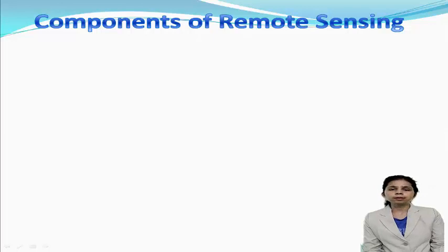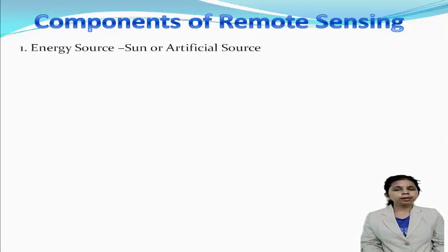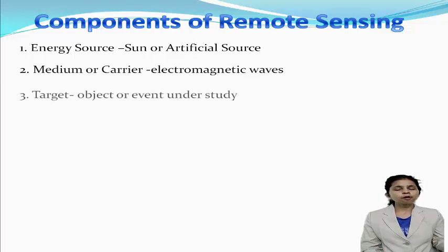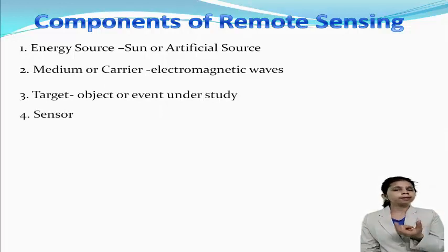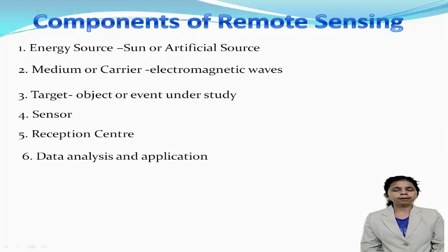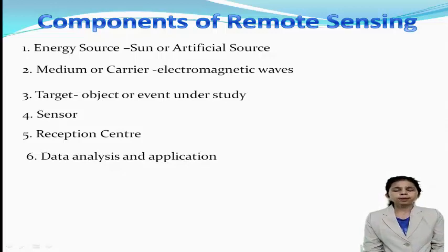The first component of remote sensing is the energy source, which can be the sun or an artificial source. The second component is the medium or carrier, which is electromagnetic radiation. The third component is the target or area under study. The fourth component is a sensor to detect electromagnetic radiation. The fifth component is the reception center, where data from the sensor is sent to receiving stations on the earth. And the sixth is data analysis and publication, where data received from the receiving station is analyzed and made available on our devices in the form of information.